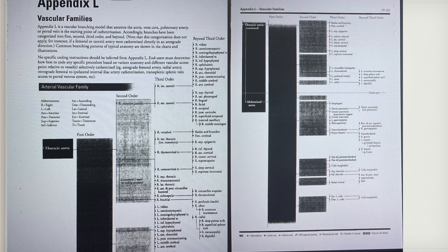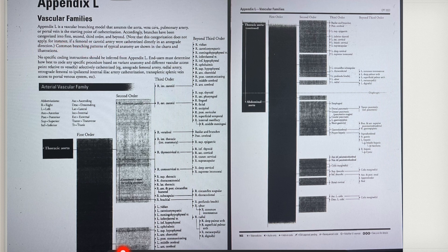Appendix L is used based on two assumptions. First, the aorta, vena cava, pulmonary artery, or portal vein are the starting points of catheterization, and branches are categorized into first, second, and third order accordingly. This categorization does not apply if the catheter is placed directly into the femoral or carotid artery in an antegrade direction.